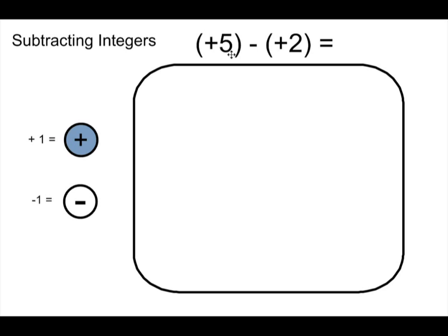So I've got positive 5 take away positive 2 equals. Just like before, the first thing I'm going to do is model the first number in the equation, positive 5. So let's get those five positives in there. There's my five positive counters.